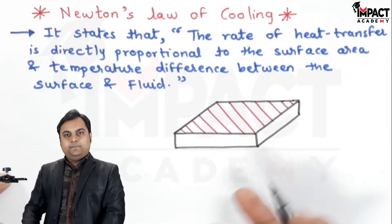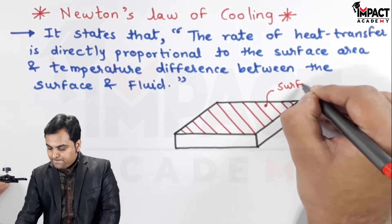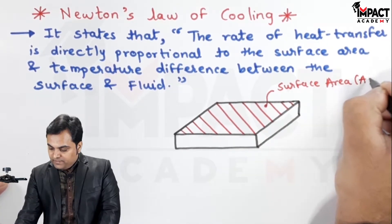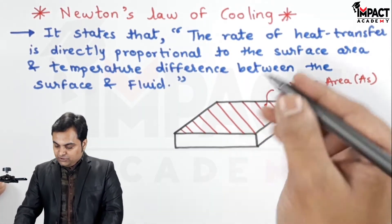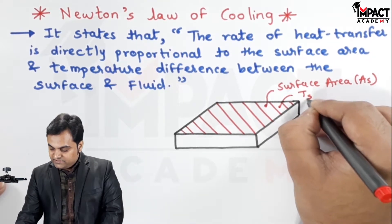Now, this is a plate or we can say having surface area A suffix S and the temperature of this surface is T suffix S.